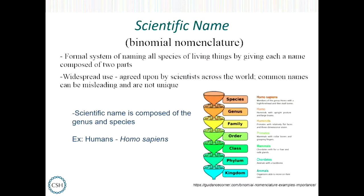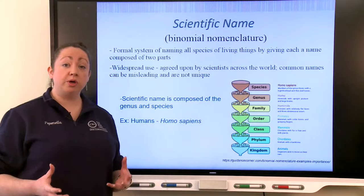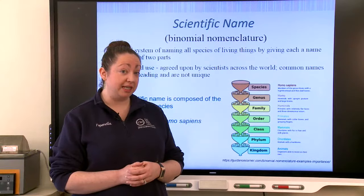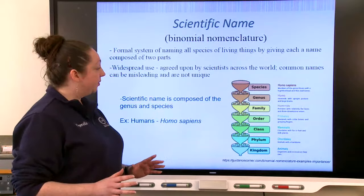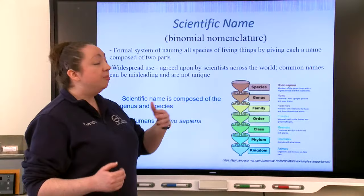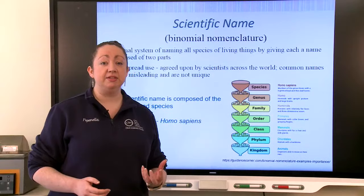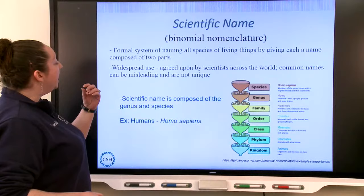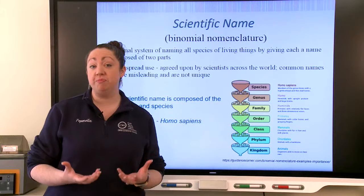Humans are the genus Homo. Other organisms also fall within Homo, such as Homo erectus and Homo neanderthalensis — Neanderthals. Modern humans fall within the species sapiens, so our scientific name using that two-part system is Homo sapiens. A fun fact: the scientific name most familiar to people is Tyrannosaurus rex — Tyrannosaurus is the genus and rex is the species.